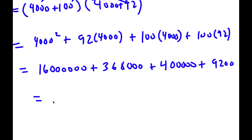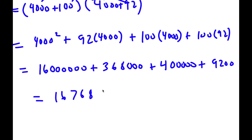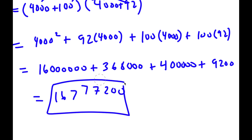So all I have to do is add all these up. 4,000 times 4,000 is 16,000,000. 92 times 4,000 is 368,000. 100 times 4,000 is 400,000. And 100 times 92 is 9,200. So 16,000,000 plus 368,000 is 16,368,000, plus 400,000 is 16,768,000, plus 9,200 equals 16,777,200. So this is my answer.